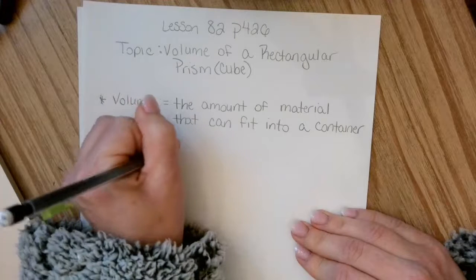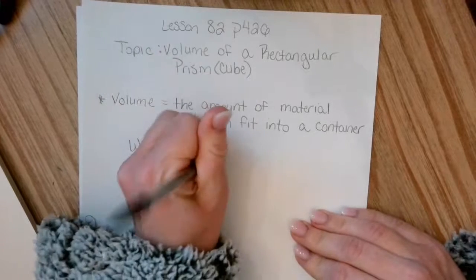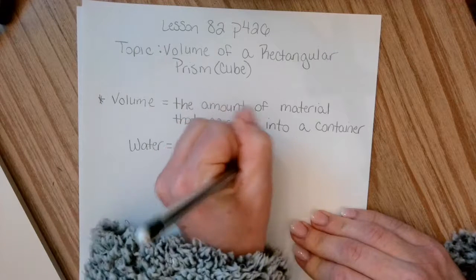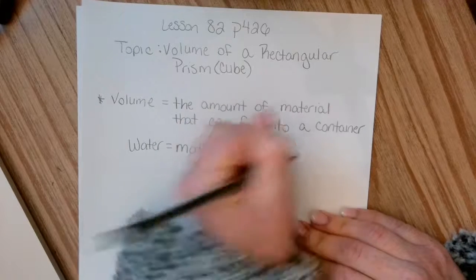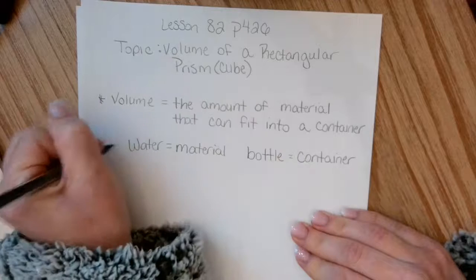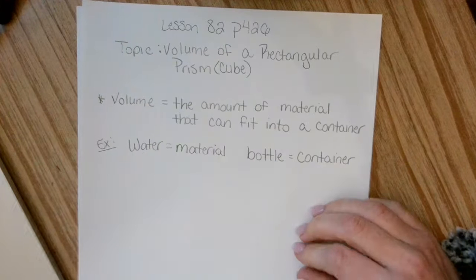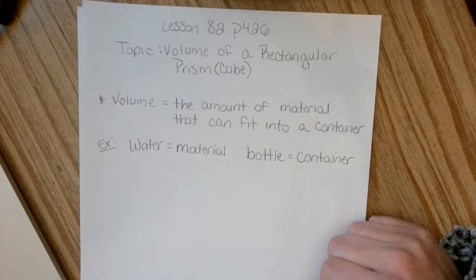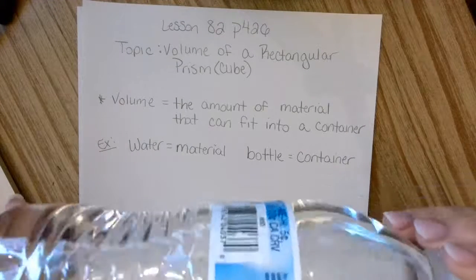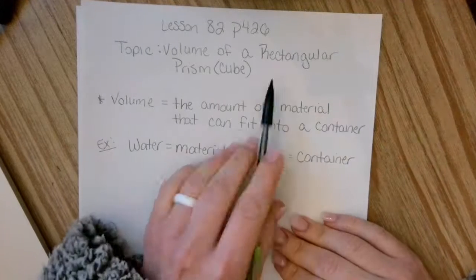So we can even write that as our example. So water would be the material, and the bottle is the container. Now, rather than looking at a cylinder type shape, just like a bottle would be, we are actually going to be focusing on a cube shape, also known as a rectangular prism.